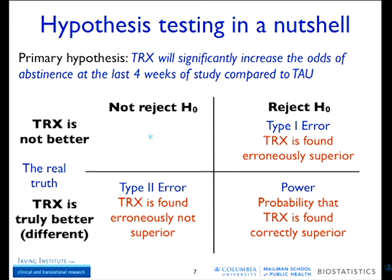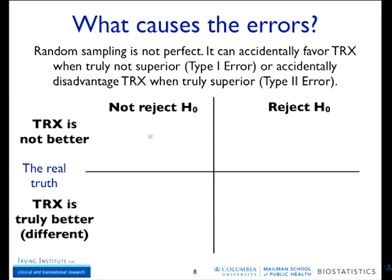We pre-select the level of significance, usually 5% — someone always asks why 5% and not 4%, and my only explanation is that we have five fingers, so as humans we like 5 and 10. NIH or any granting agency requests high power, usually at least 80% and sometimes 90%. When we select power at 80%, because power and type II error are complements, the type II error will be at most 20%.